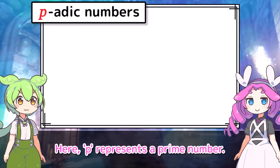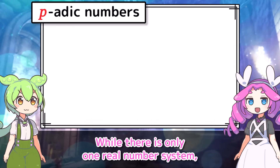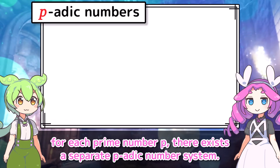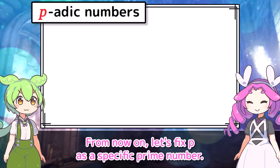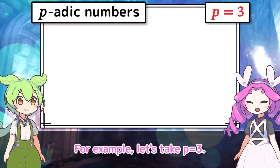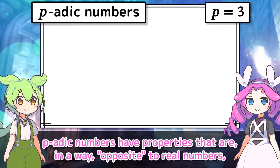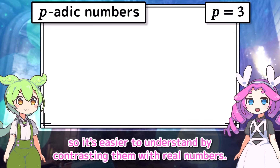P-adic numbers — that sounds so mysterious. P represents a prime number. While there is only one real number system, for each prime number P, there exists a separate P-adic number system. From now on, let's fix P as a specific prime number — for example, let's take P equals 3. P-adic numbers have properties that are in a way opposite to real numbers, so it's easier to understand by contrasting them with real numbers.